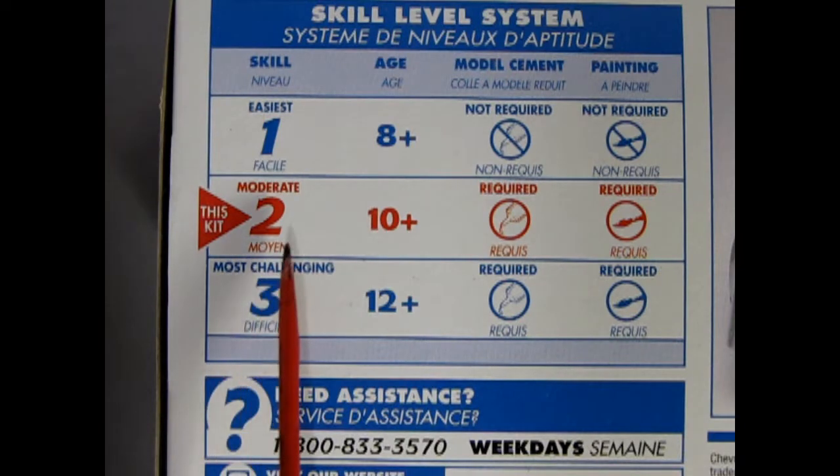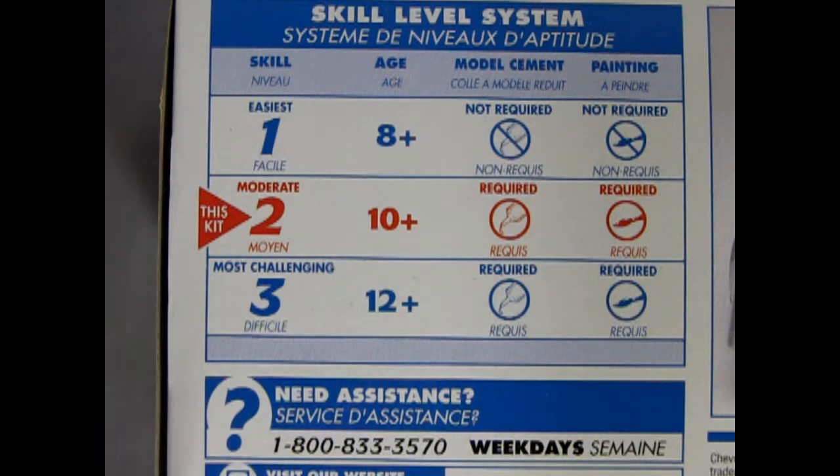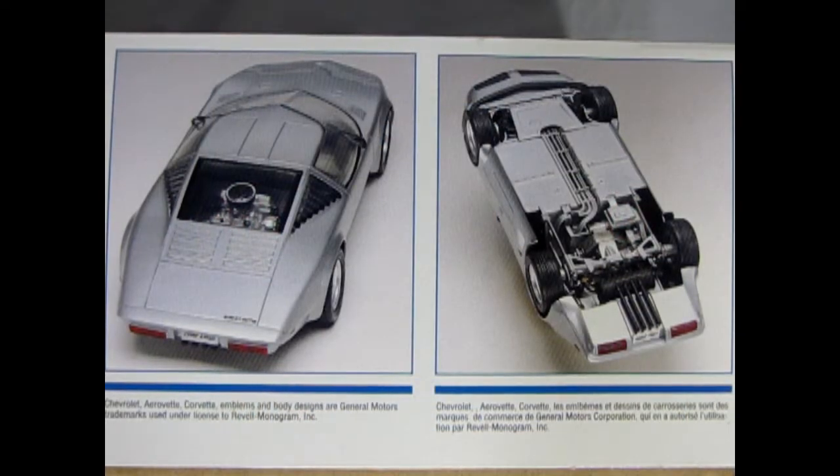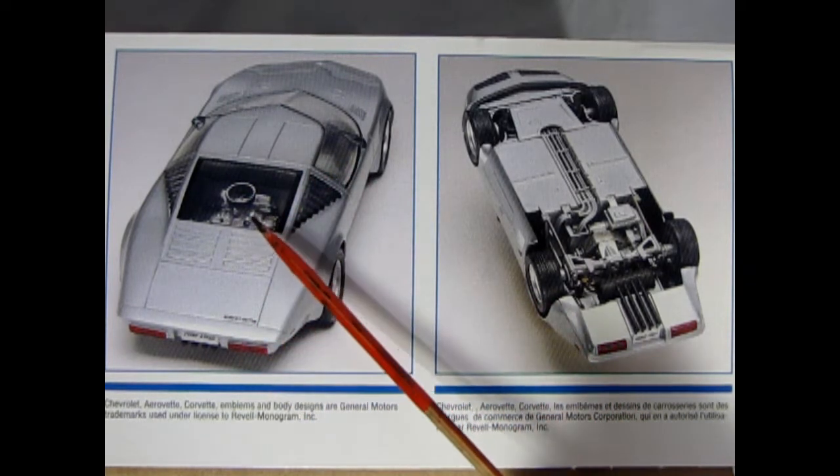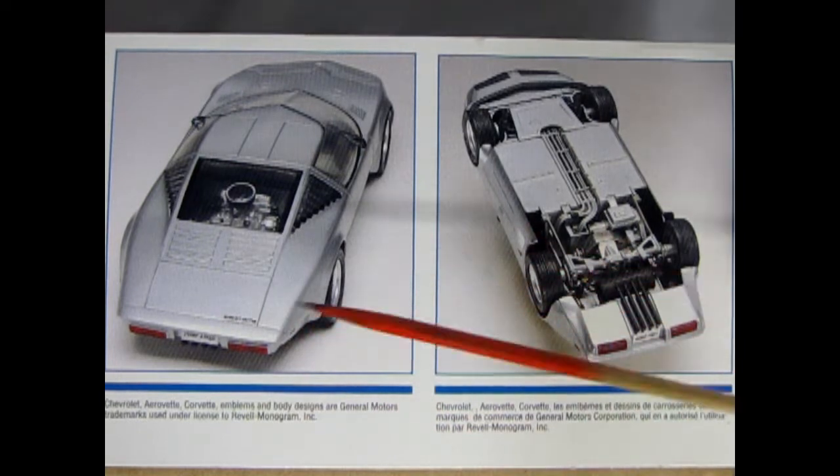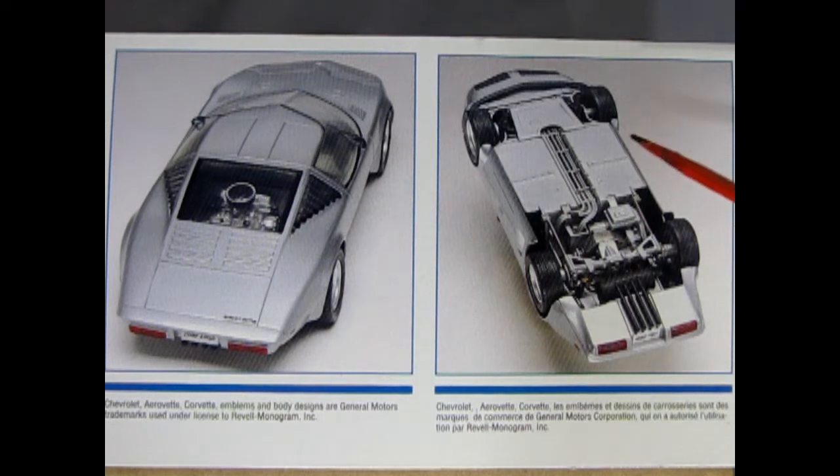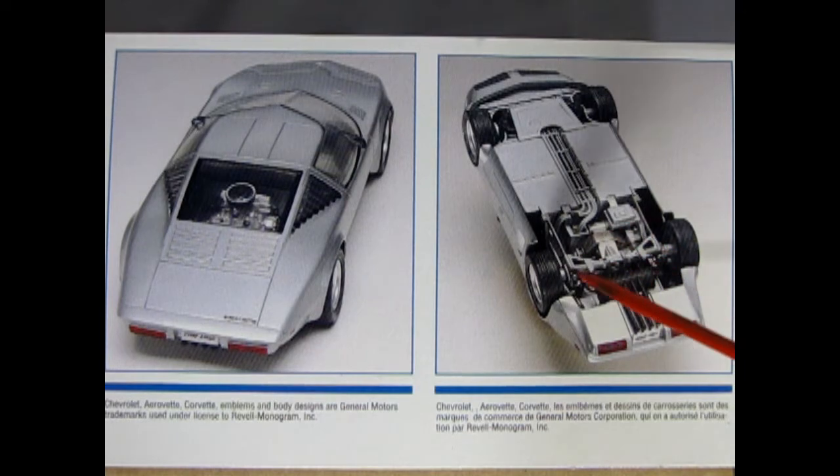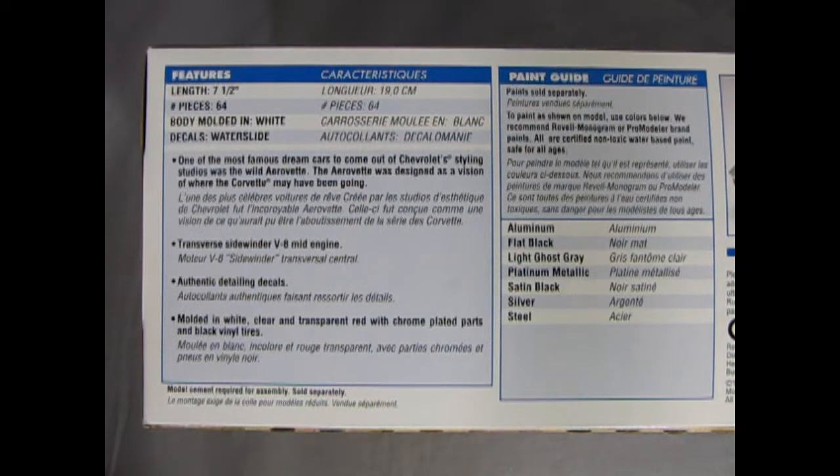This is a skill level 2 moderate kit for ages 10 and up, requires glue and paint to put together. In this panel we can see how the model builder assembled their Chevy Aerovette and this is a pretty cool car. The engine was a mid mount just ahead of the rear axle and in the passenger compartment. Underneath here we can see the frame and all the tubing that goes in place as well as the entire engine and rear suspension assembly. The length of the car is seven and a half inches. You get 64 pieces in here. Body is molded in white and the decals are water slide.